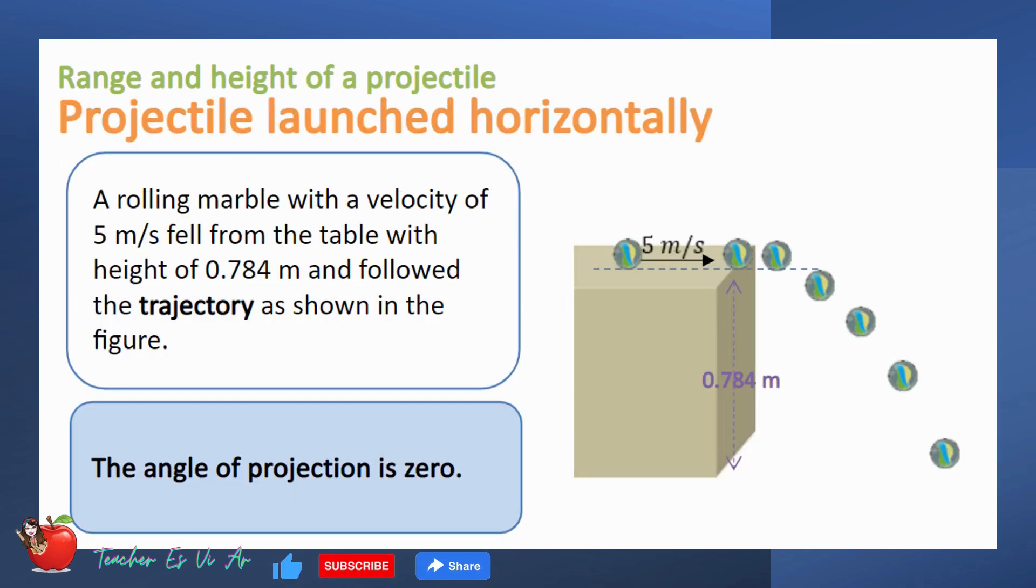Let us first consider an object released horizontally. For example, a rolling marble with a velocity of 5 meters per second fell from the table with a height of 0.784 meter and followed the trajectory shown in the figure. Since it is released horizontally, our angle of projection is zero.